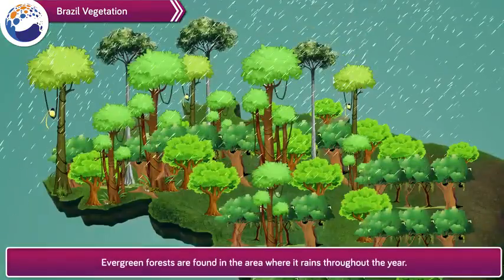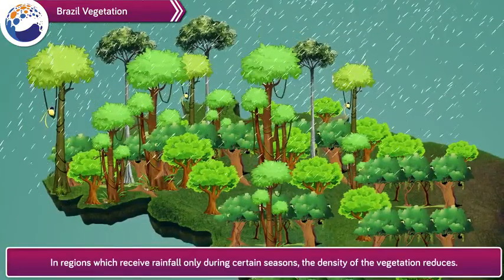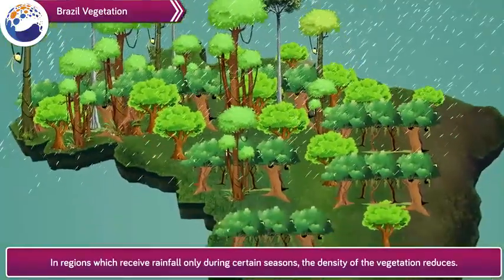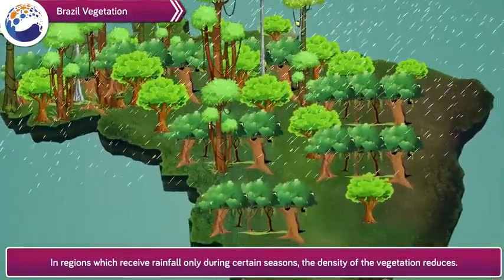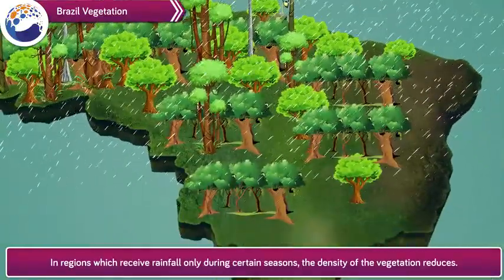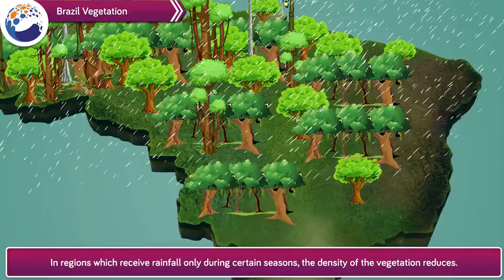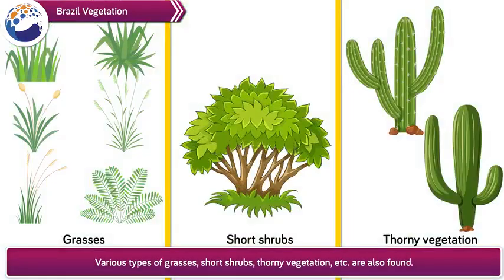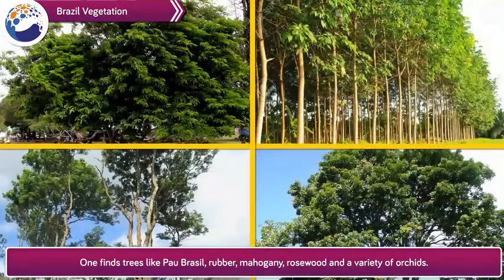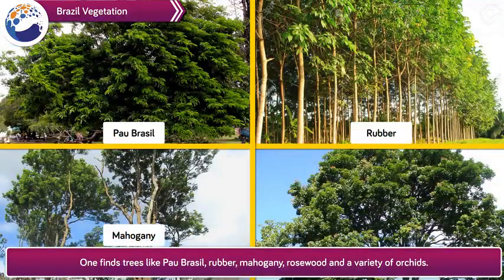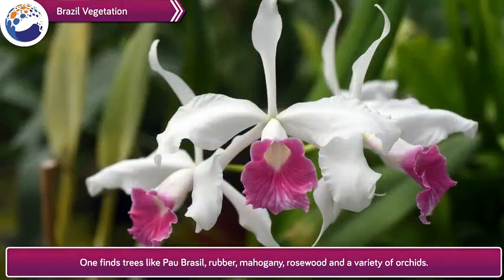Evergreen forests are found in the area where it rains throughout the year. In regions which receive rainfall only during certain seasons, the density of the vegetation reduces. Various types of grasses, short shrubs, and thorny vegetation are also found. One finds trees like pau-brasil, rubber, mahogany, rosewood and a variety of orchids.